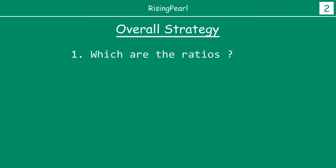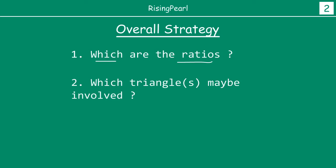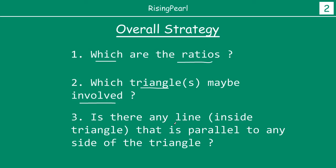As we saw earlier, questions that come up on these three topics — we have to look out for which ratios are involved. Secondly, we have to keep an eye on which triangles may be involved. And lastly, we are always looking at whether there is any line inside a triangle that is parallel to any of the sides of the triangle. Because all three concepts relate to a line inside a triangle parallel to one side, and how that line divides the other two sides in equal ratios.